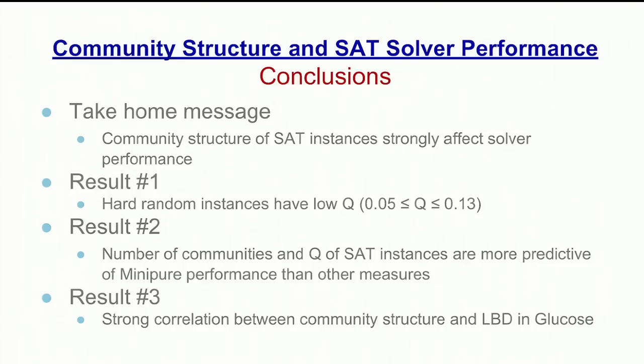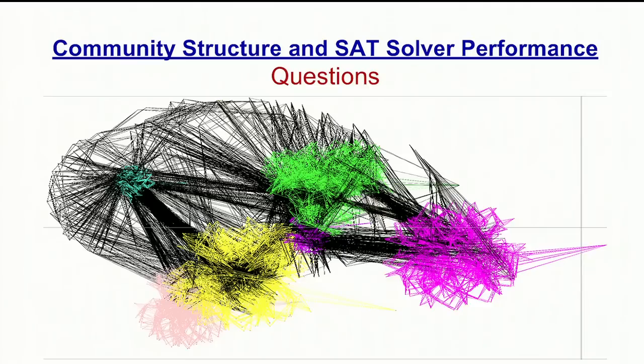To conclude, the take-home message from this talk is that the community structure of a SAT instance strongly affects solver performance, and we've seen this with three results: hard random instances have a Q between 0.05 and 0.13; the number of communities and the Q of a SAT instance is more predictive of solver performance than other measures; and there is a strong correlation between the number of communities and the literal block distance in the glucose solver. Thank you very much.